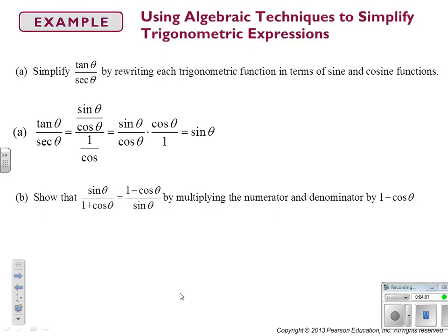Back in fifth grade we learned that dividing by a fraction is the same as multiplying by the reciprocal — this is why we do that. So dividing by 1 over cosine is the same as multiplying by cosine over 1. The cosine on the top cancels with the cosine on the bottom, and we get sine θ over 1, which is just sine θ.